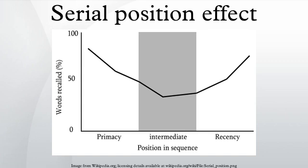The primacy effect, in psychology and sociology, is a cognitive bias that results in a subject recalling primary information presented better than information presented later on. For example, a subject who reads a sufficiently long list of words is more likely to remember words towards the beginning than words in the middle. Many researchers tried to explain this phenomenon through free recall tests.